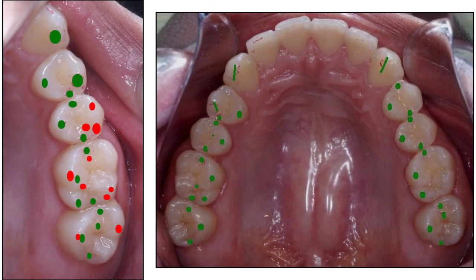For this particular patient, an occlusal adjustment by selective grinding was indicated. The photo on the left shows in red the contact interferences during left canine guidance that need to be eliminated during treatment. On the right photo, a final occlusal view of the completed treatment — we can observe in green contacts in all functional cusp tips, marginal ridges, and central fossa.